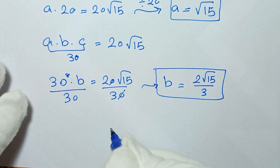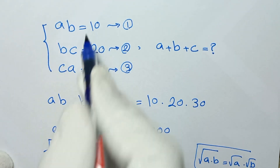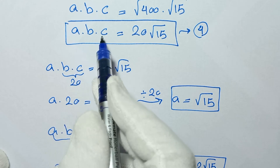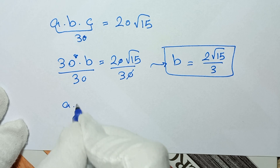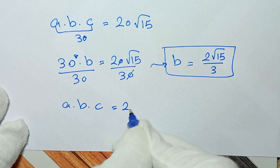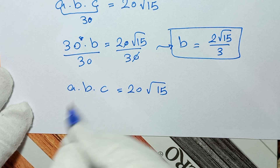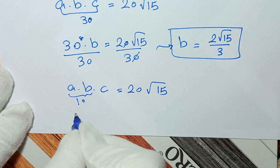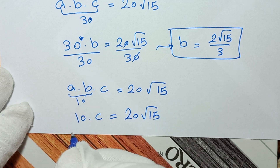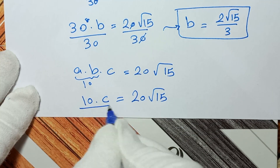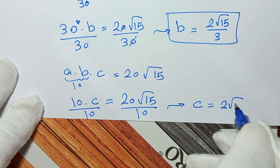To find the value of C, from equation number 1, AB equals 10. We have A times B times C equals 20√15, and AB equals 10. So 10 times C equals 20√15. Dividing both sides by 10, C equals 2√15.